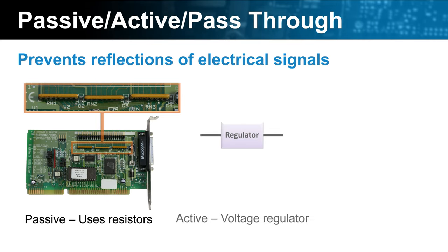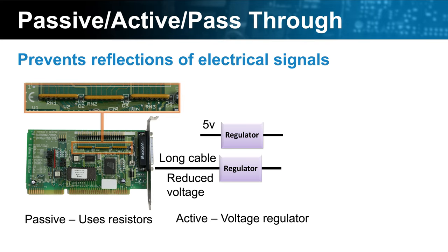To get around this problem, active terminators can be used. Active terminators use voltage regulators rather than resistors. A SCSI cable will use 5 volts to transfer a signal over the cable. The problem occurs when using a long cable — when the SCSI cable gets longer, the voltage starts reducing. Resistors are not able to adapt to the reduced voltage. However, by using regulators, the voltage that passes through the terminator will always be the same. This makes the cable more reliable, particularly when the cable length gets longer. Active terminators give better signal quality, so it is recommended that you use an active terminator over a passive terminator whenever possible.